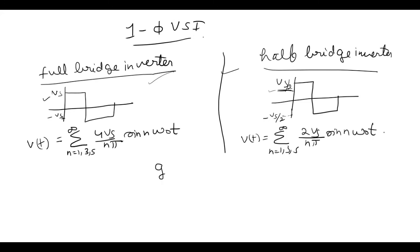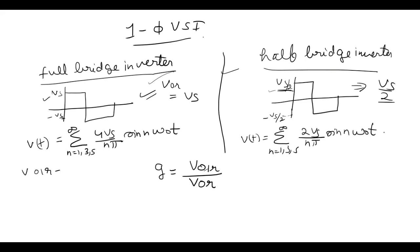Now distortion factor G, which equals RMS value of the fundamental frequency divided by the RMS value of the whole output. In this case VOR equals Vs, and here it is Vs by 2. To find the RMS of the fundamental: suppose there is a function f(t) equal to 2 sin(nt). Clearly 2 is the maximum value, and its RMS value equals 2 upon root 2 — you divide the maximum value by root 2.